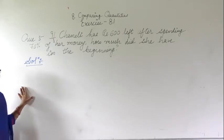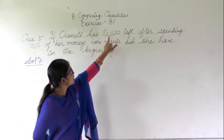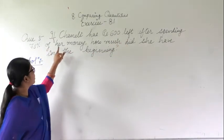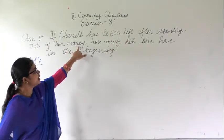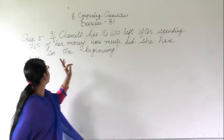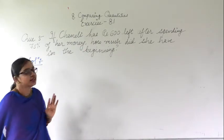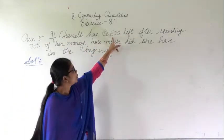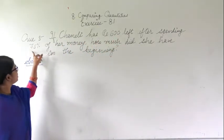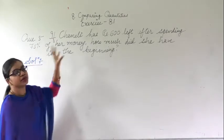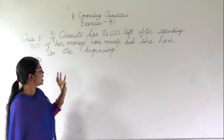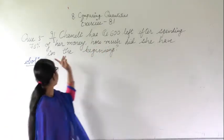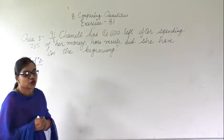Question number 5. In this question it says that if Chamelee has Rs. 600 left after spending 75% of her money, how much did she have in the beginning? She has 600 rupees left after spending 75% of the money. The total amount of money is not given, so we have to find out how much she had in the beginning.